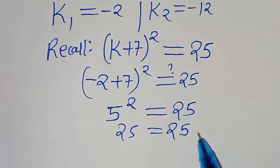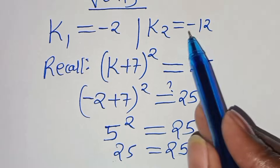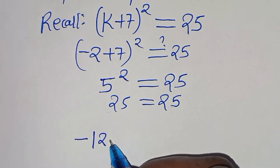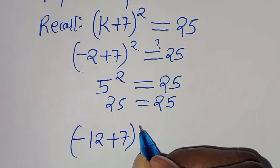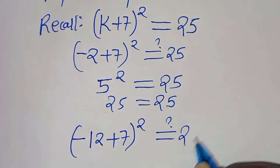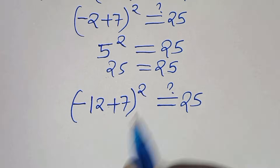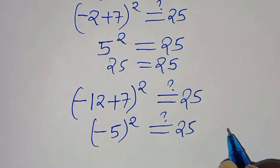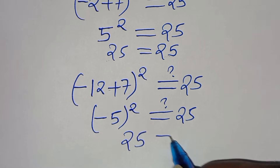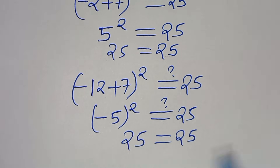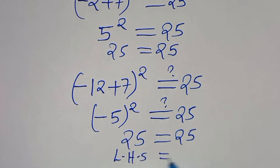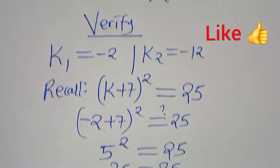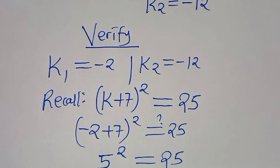Let's check for k₂ which is minus 12. We have (minus 12 plus 7)² which should give a value of 25. Minus 12 plus 7 is minus 5, raised to the power of 2 gives 25, which is equal to 25. The left hand side equals the right hand side, and this proves that both k₁ and k₂ satisfy the equation.